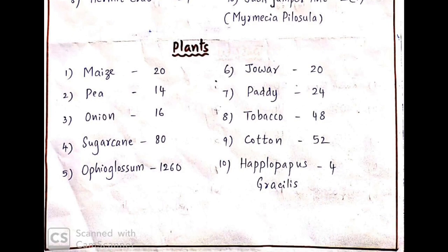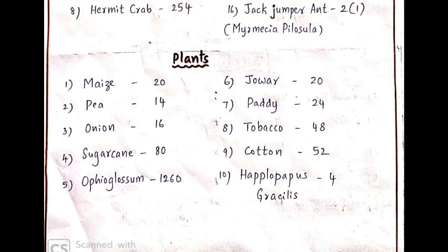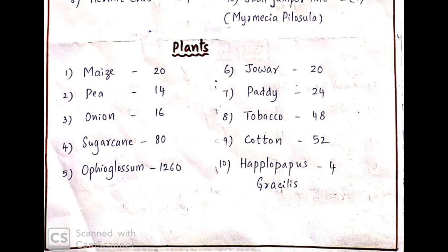Now let's look at the number of chromosomes in plants. Maize contains 20 chromosomes. Pea contains 14 chromosomes. Onion contains 16 chromosomes. Sugarcane has 80 chromosomes. Ophioglossum has 1260 chromosomes — that means 630 pairs of diploid chromosomes. Ophioglossum is a kind of fern plant, and this is the important point: the organism having the highest number of chromosomes is Ophioglossum.